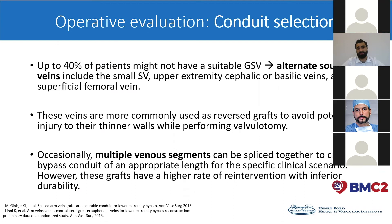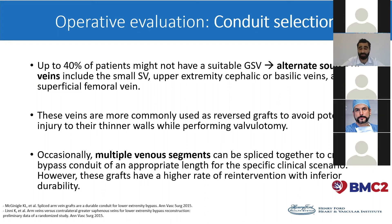However, up to 40% of patients might not have a suitable great saphenous vein, or the great saphenous vein might have been used for CABG, for example. Alternate sources of veins include the small saphenous vein, upper extremity cephalic or basilic vein, and superficial femoral vein. These veins are more commonly used as reversed to avoid potential injury due to their thinner walls while performing valvulotomy. Occasionally, multiple venous segments can be spliced together to create a bypass conduit of appropriate length. However, these grafts have a higher rate of reintervention with inferior durability.